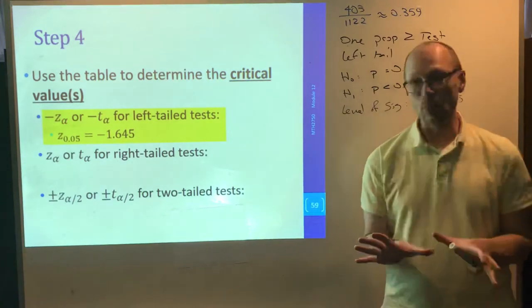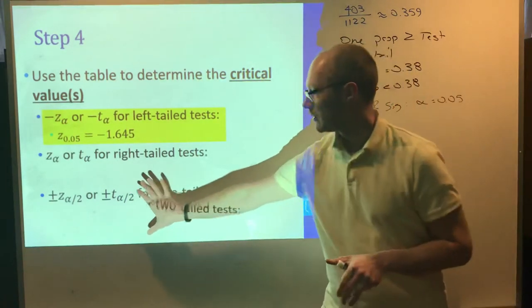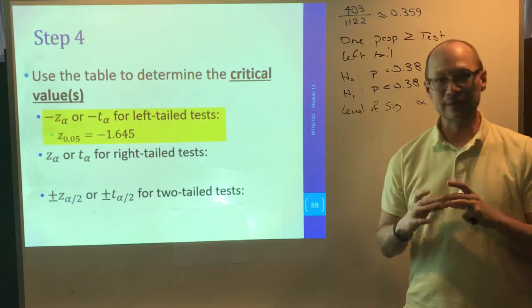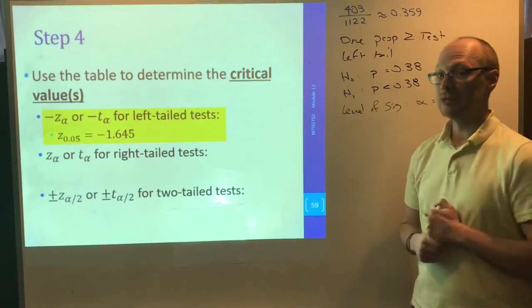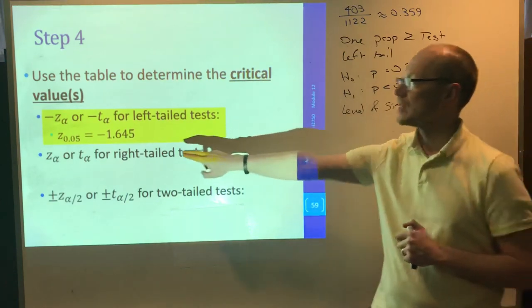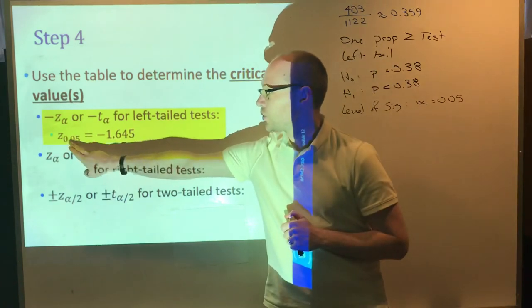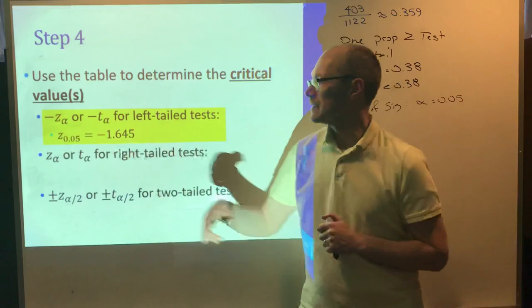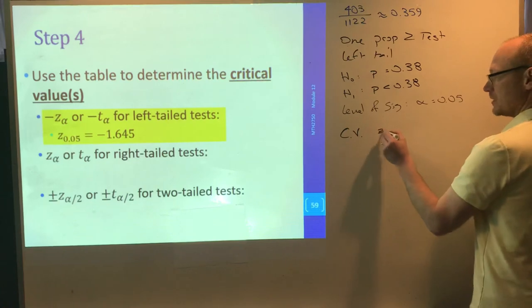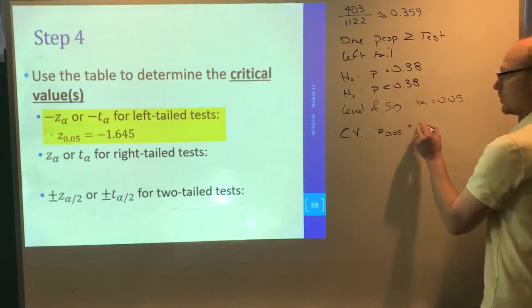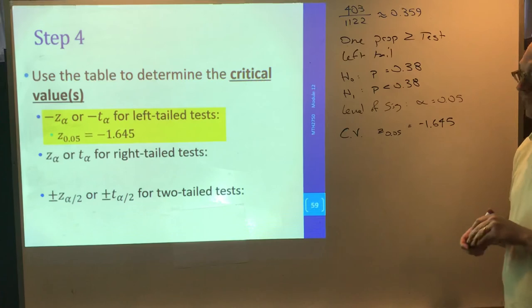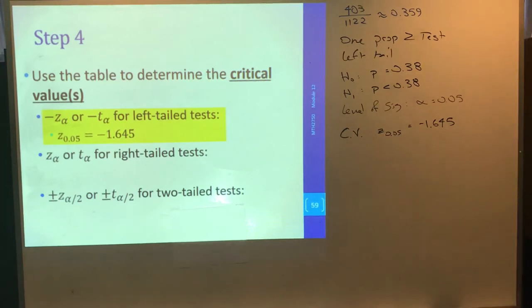Now, we have to use that table to figure out, remember the table that we were looking at? You need to then find your critical values. And for left tailed tests, a Z score for an alpha of 0.05 is negative 1.645. So my critical value is Z.05 equals negative 1.645.